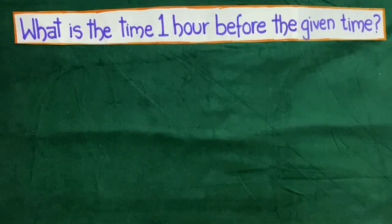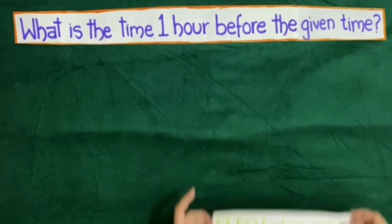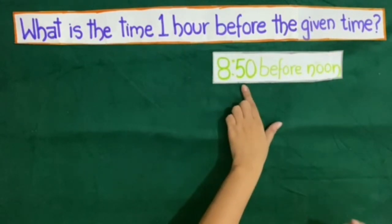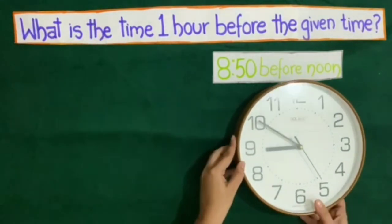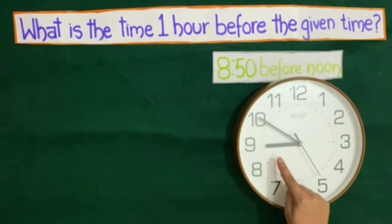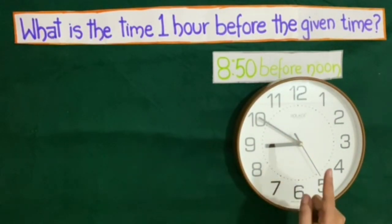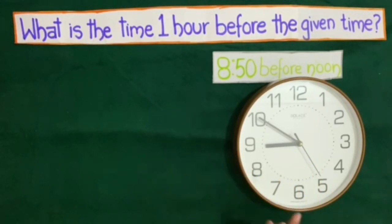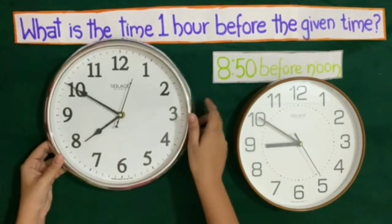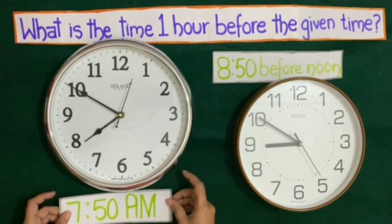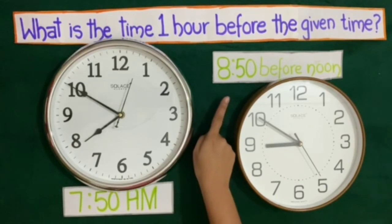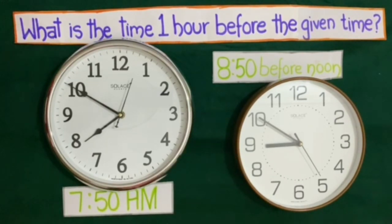Now we will solve some questions from your mathematics book. The time given is 8:50 before noon, which means 8:50 AM. Here on the clock the time is 8:50 AM. Time 1 hour before 8:50 AM will be 7:50 AM.